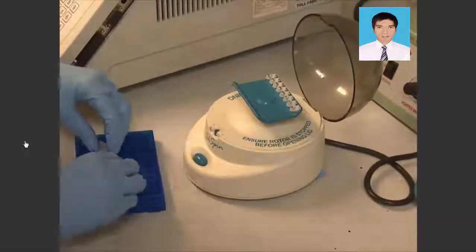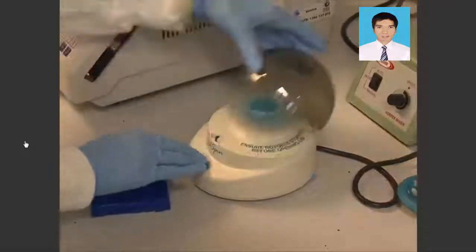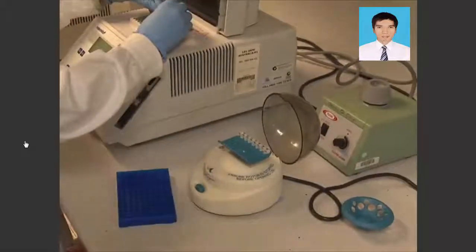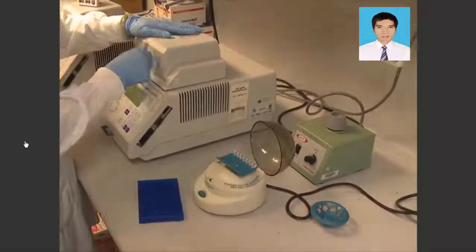In a temperature gradient thermocycler, set the run reaction in a gradient plus or minus 3 degrees Celsius from the predicted Tm of the primer across 8 to 10 tubes. Vortex the tubes and spin briefly in a microcentrifuge prior to placing them in the thermocycler.